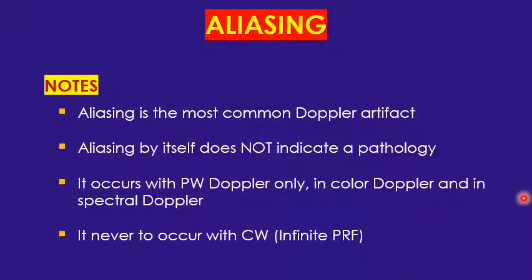Why don't we have aliasing with continuous wave? Because with continuous wave the PRF is almost infinity — the waves have no listening time, so the listening time is zero. When you compute the ratio between the pulse and listening time, the listening time is zero, making the pulsation rate effectively infinity.